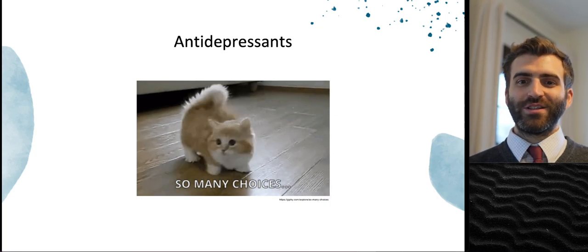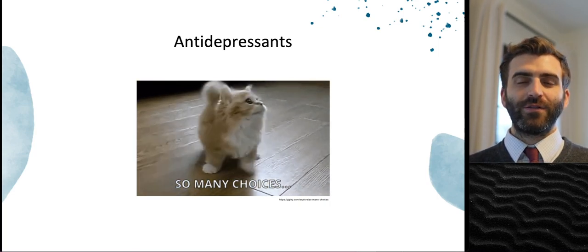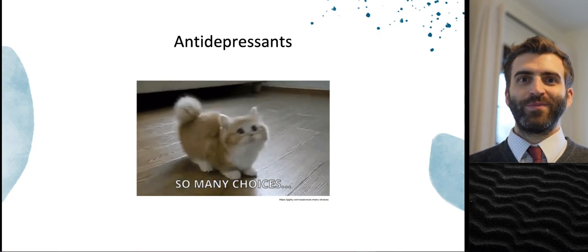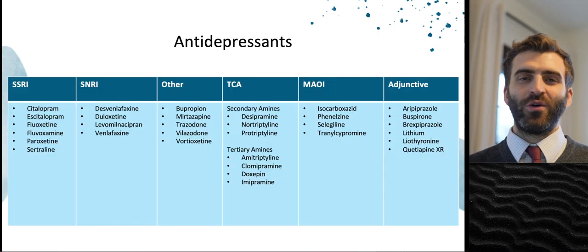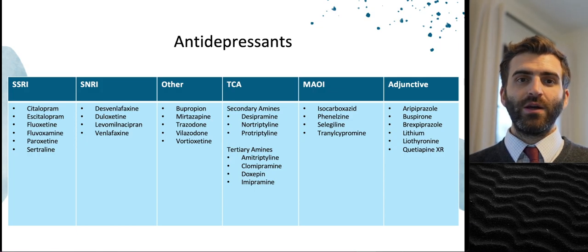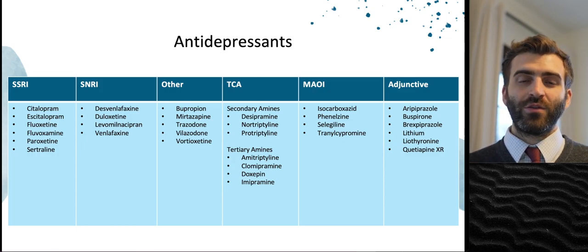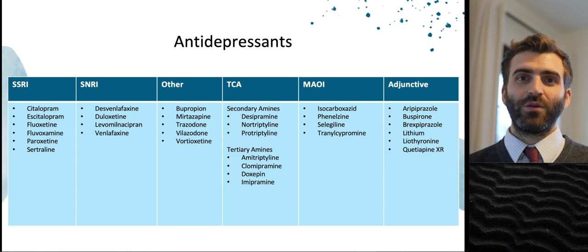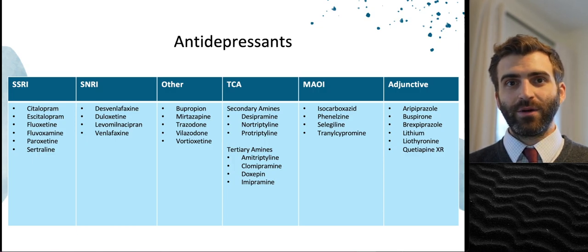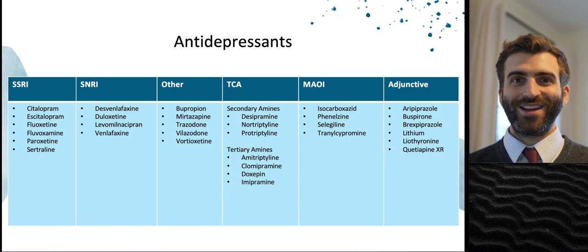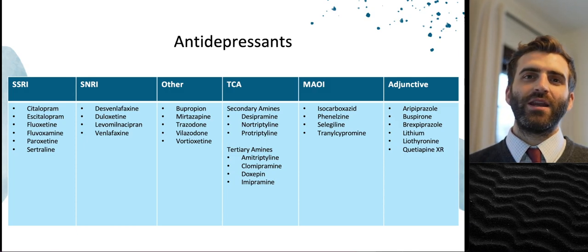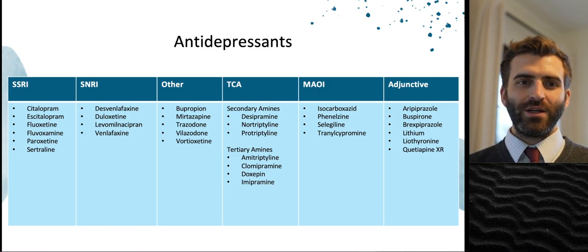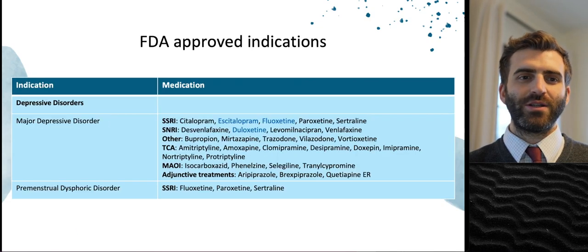There's a whole lot of antidepressants out there. Antidepressants can be thought of as an umbrella term, and under that umbrella there are many subclasses: selective serotonin reuptake inhibitors (SSRIs), serotonin norepinephrine reuptake inhibitors (SNRIs), other or atypical antidepressants, tricyclic antidepressants, monoamine oxidase inhibitors, and even adjunctive medications.